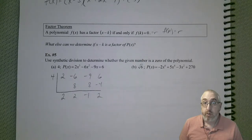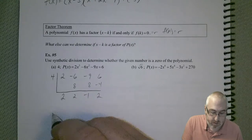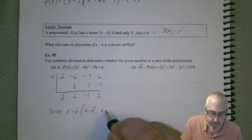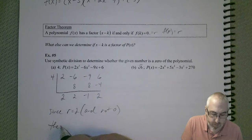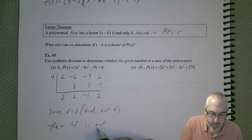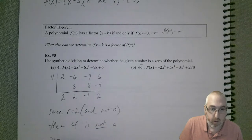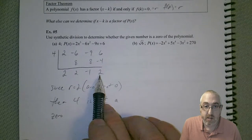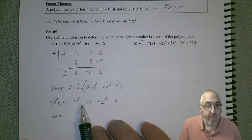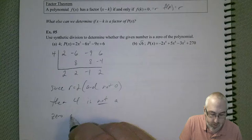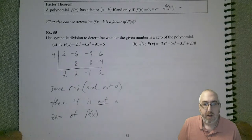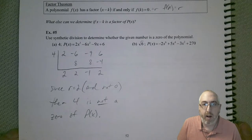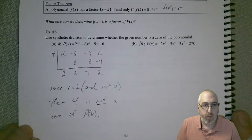So what's your conclusion? So you can see what I'm writing here, hopefully. So since r is equal to 2, based on that last number, and not 0, then 4 is not a zero of p(x). Now again, you don't have to get too crazy with writing a proper sentence or whatnot, but just so that way you're clear of what this means for us.